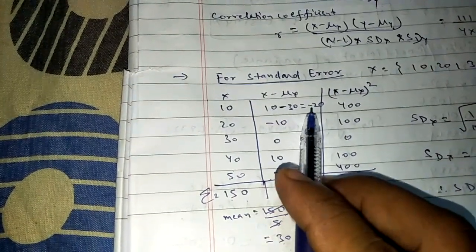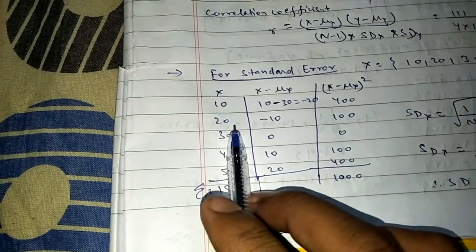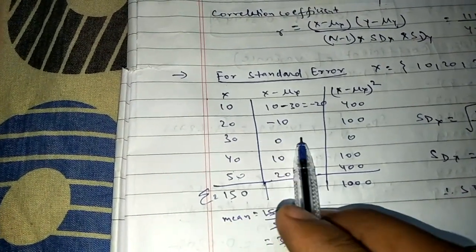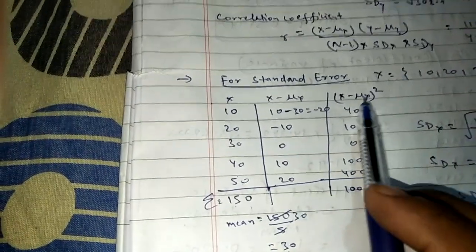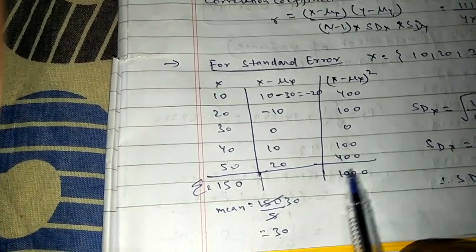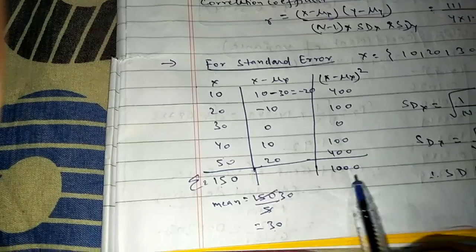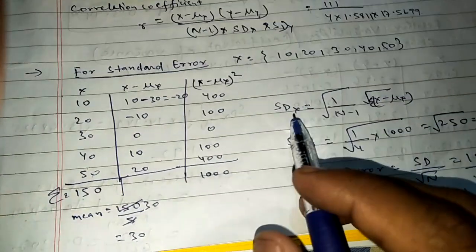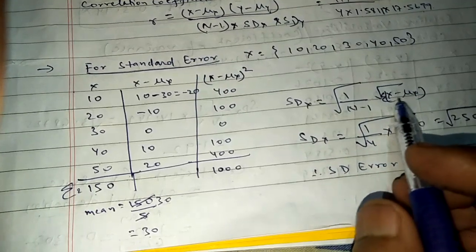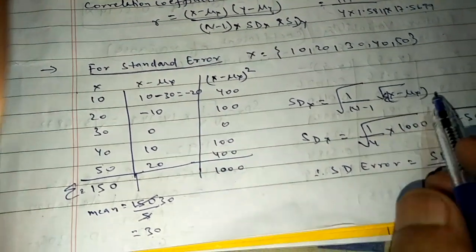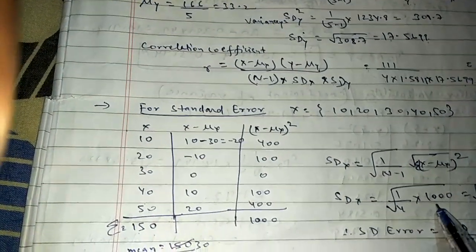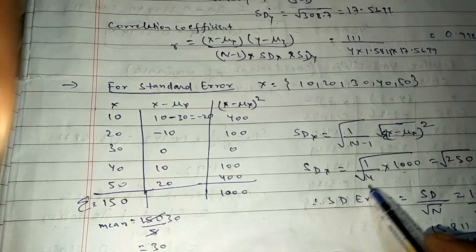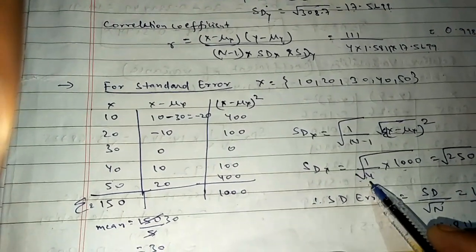x minus mean: 10 minus 30 = -20, 20 minus 30 = -10, 30 minus 30 = 0, 40 minus 30 = 10, 50 minus 30 = 20. After squaring: 400, 100, 0, 100, 400. The summation of the squared values is 1000. Divide by n minus 1, which is 4.